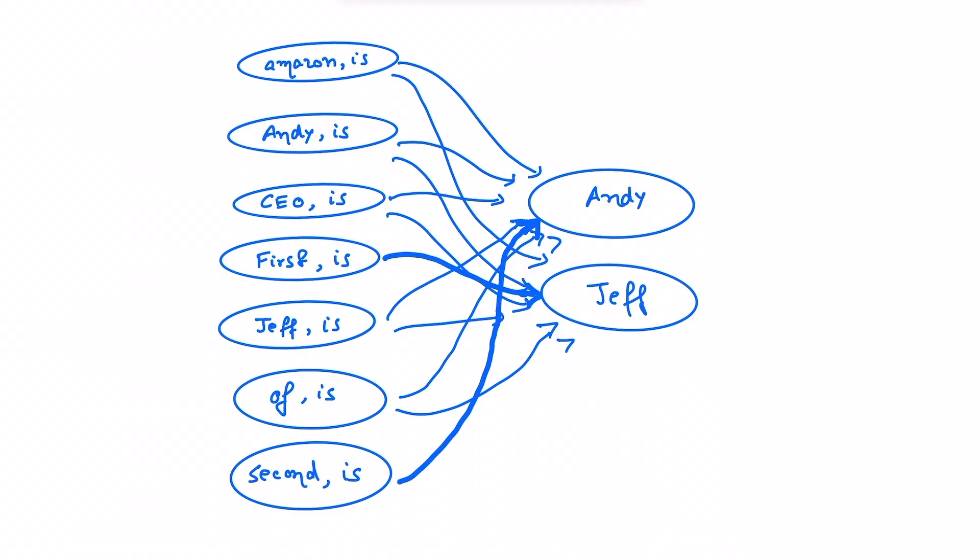Now that matrix can also be represented in the following form where each of these nodes are the features, these were the rows in the matrix, and the intensity of the arrows here represent the value in the matrix that is the weight. Now this is more commonly known as neural network.